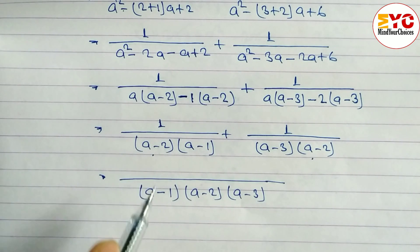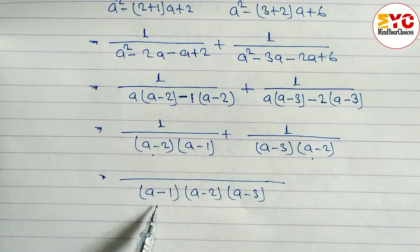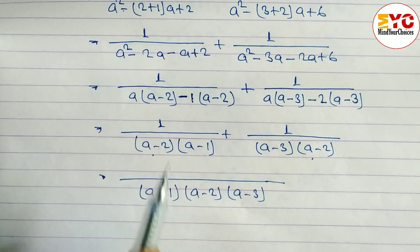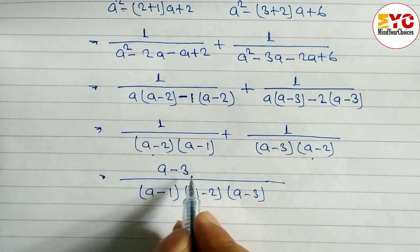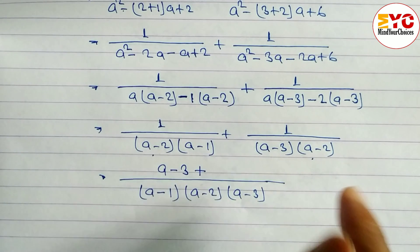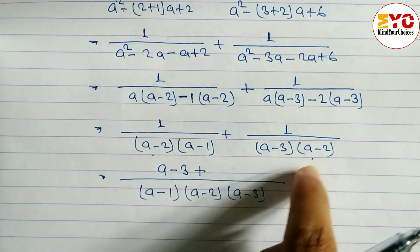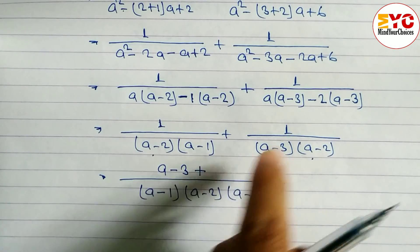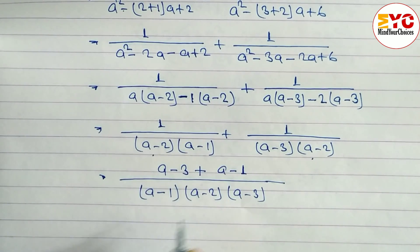Now we divide the LCM by each denominator. For the first fraction: (a-2) cancels with (a-2), and (a-1) cancels with (a-1), leaving (a-3) multiplied by 1 — so we write (a-3). For the second fraction: (a-3) cancels, (a-2) cancels, leaving (a-1) — so we write (a-1).